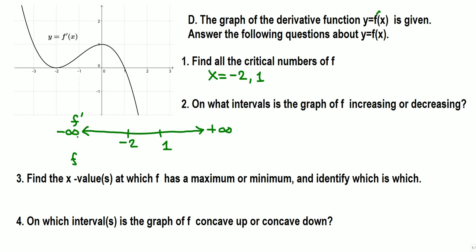For any number in the interval negative infinity to negative 2, the derivative is above the x-axis, so the derivative has positive values. From negative 2 to 1, the derivative is still positive. From 1 through positive infinity, the derivative is below the x-axis, so it is negative.